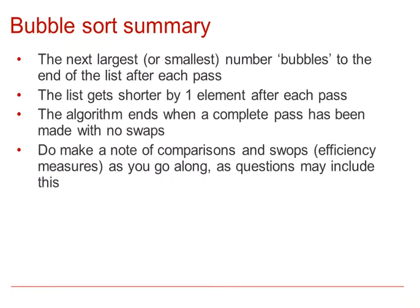In summary for the bubble sort, either if it is ascending or descending, the next largest or smallest number bubbles to the end of the list after each pass. You will notice that the list in effect gets shorter by one element after each pass, in other words, there is one less comparison each time. The algorithm ends when a complete pass has been made with no swaps. This may or may not be when you have worked your way through all of the iterations for the comparisons. Do make a note of comparisons and swaps which are in effect efficiency measures as you go along as questions may include this.